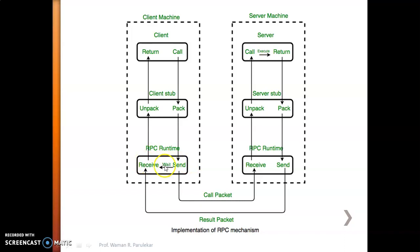The RPC runtime is responsible for transmission, retransmission, acknowledgement, routing, and encryption. Once it gets the packed message from the client stub, it sends that message to the RPC runtime on the server side. The server stub unpacks the request and makes a normal procedure call to invoke the required procedure in the server. The server executes the procedure and returns the result to the server stub, which passes it to the server-side RPC runtime. That RPC runtime sends it to the client-side RPC runtime, which passes it to the client stub, which unpacks it so the normal response is received by the client.